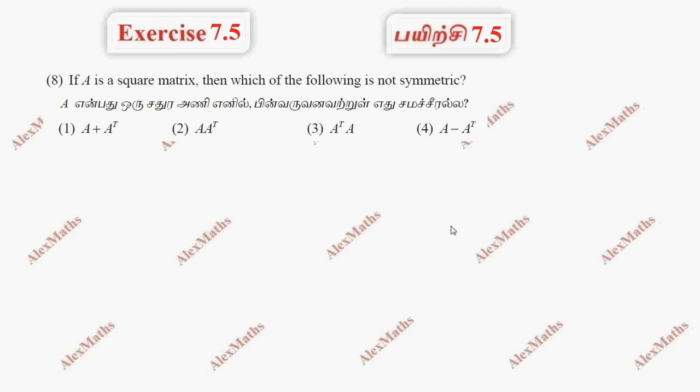Hi students, this is Alex here. X is 7.5, question number 8. If A is a square matrix, which of the following is not symmetric?